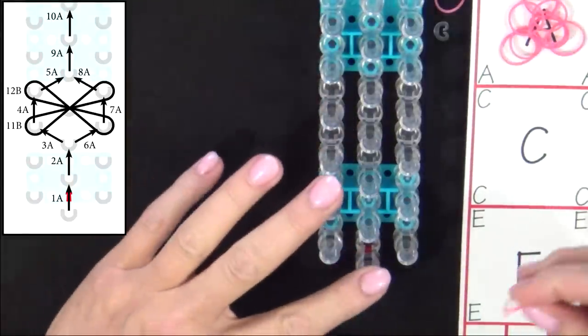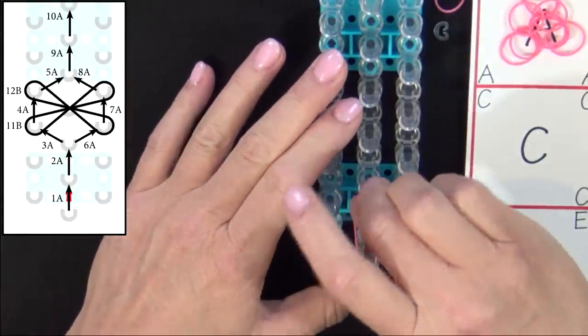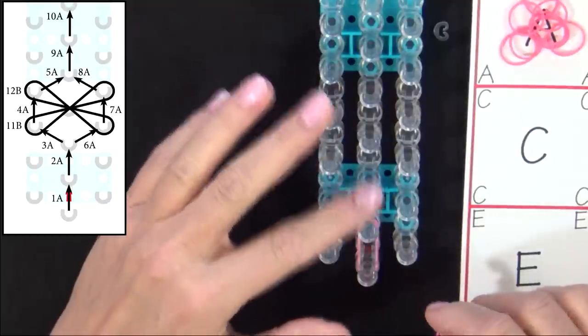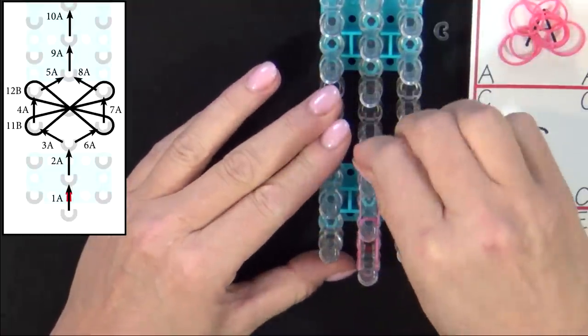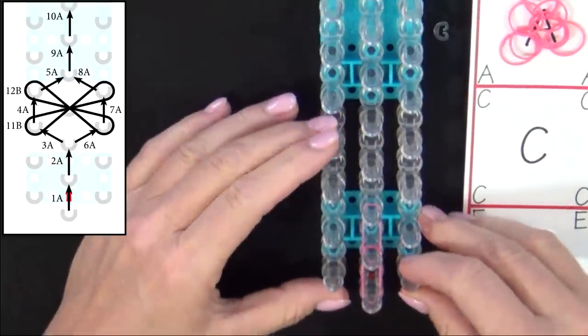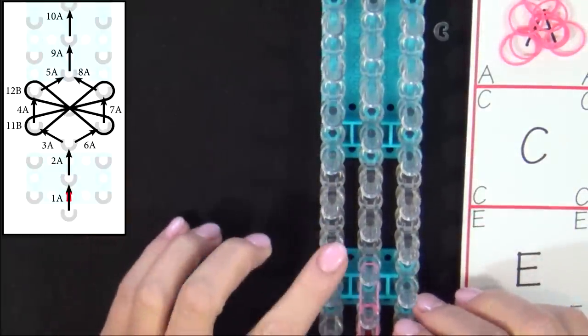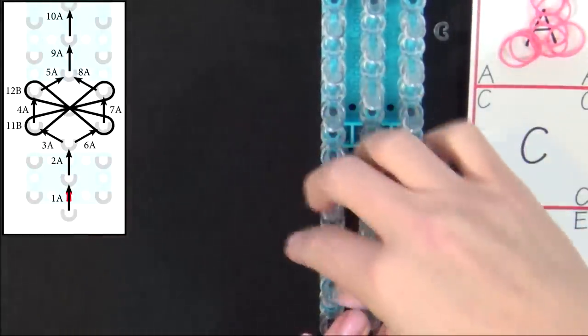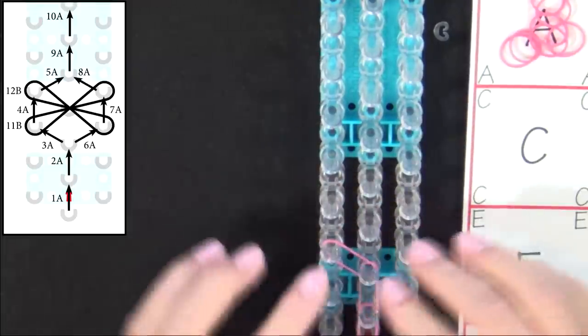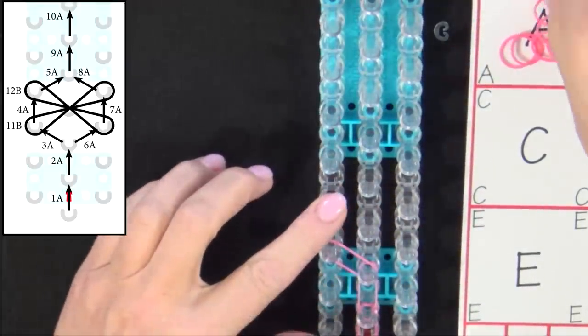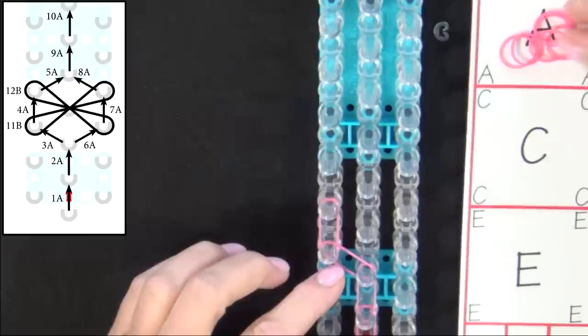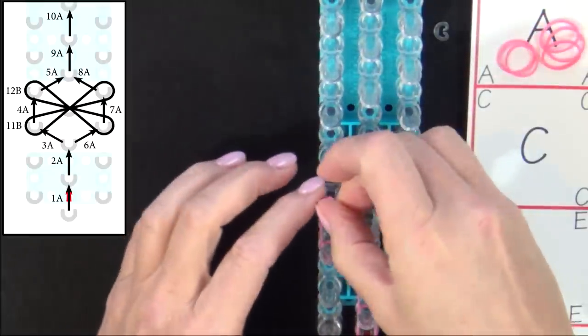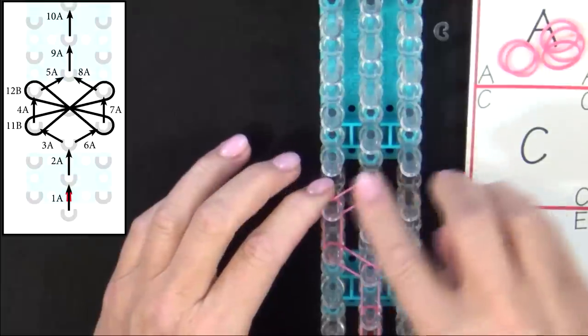We'll start from the center pin and place band 1A. Our second band will be 2A. Our third band will go from the end of that band out to the left. 3A will continue up the left side of the loom to place 4A. And 5A will turn into the middle.